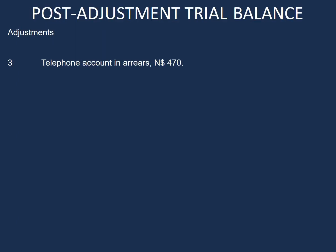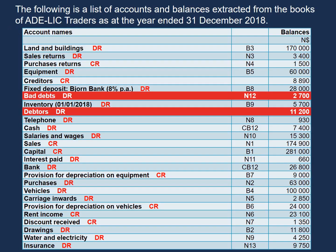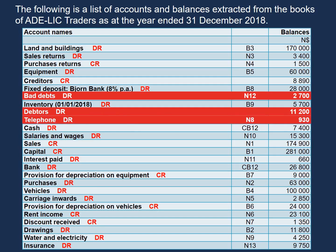Our next adjustment is telephone account in arrears $470. The two accounts we have are telephone and accrued expenses. Our accrued expenses is not on our list of balances, so we will need to add that to our trial balance. The account that is in our list is telephone, so let's go ahead and highlight telephone in our list of balances. Now we know we need to do an adjustment for our telephone account.